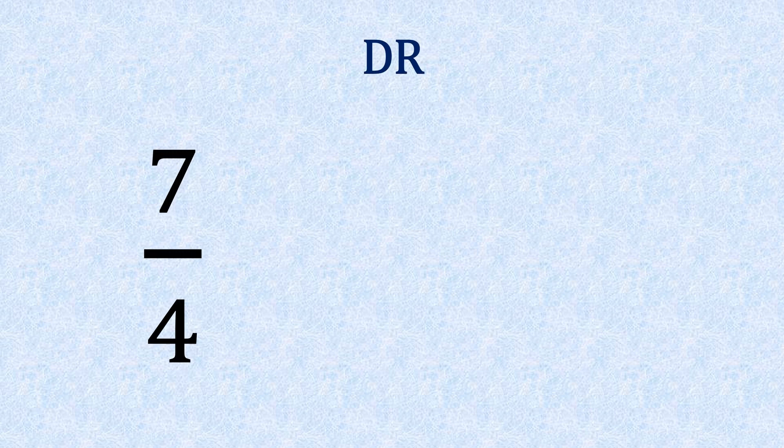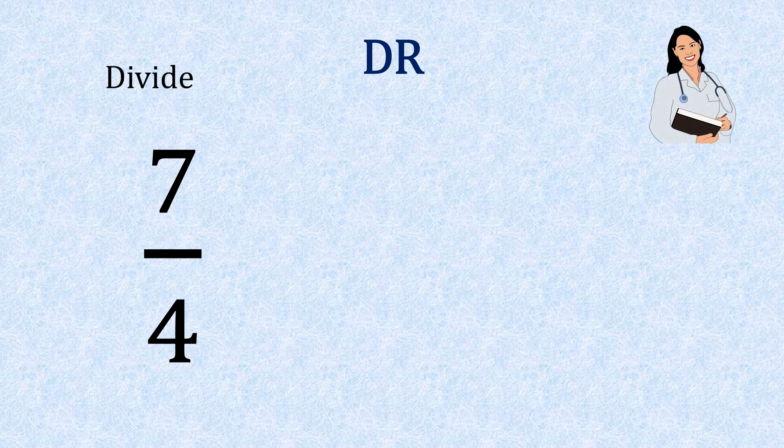Now, what happens if we have leftovers? Here we have seven fourths. So let's change it using the doctor formula, meaning D for divide and R for remain.